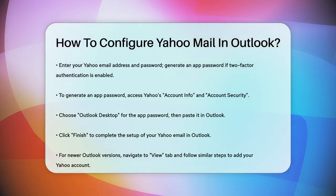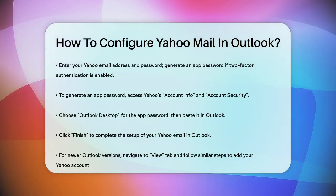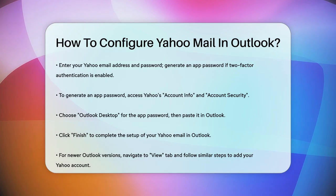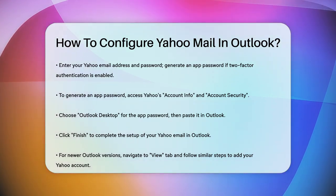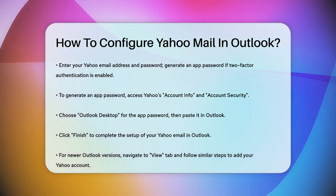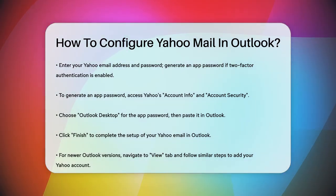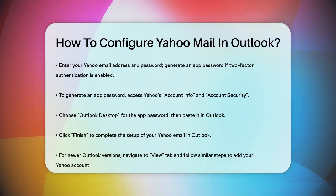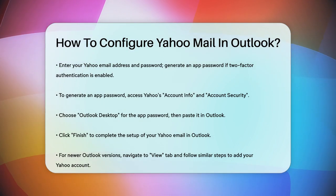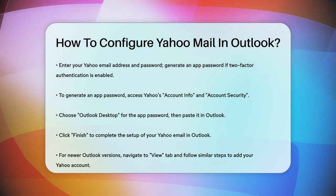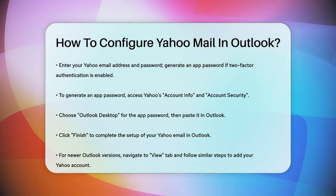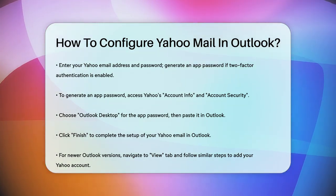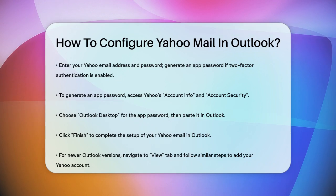If you're using the newer version of Outlook, the steps are slightly different. You'll go to the View tab, select View Settings, then Accounts and Email Accounts. Here you'll click on Plus Add Account. Enter your Yahoo account details and follow the prompts to complete the setup, including any two-factor authentication.